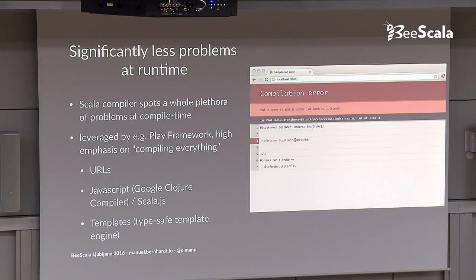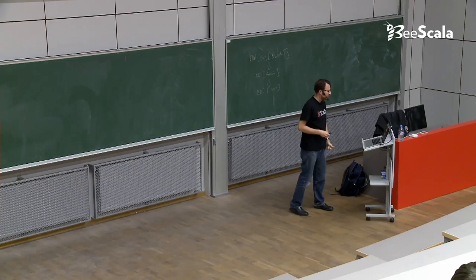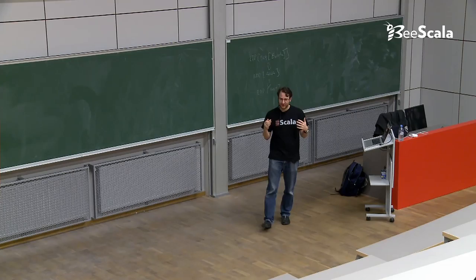The Play framework, the idea is everything should be compiled. And that's code, but also Scala templates, but also JavaScript code that you use being managed by the Play framework with the Google closure compiler. URLs, whatnot. You can use Scala.js, all of this stuff. So, I'm not saying that you will not have surprises at runtime, but you will have much, much less surprise at runtime.